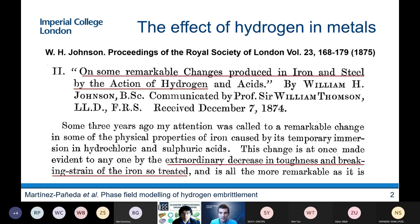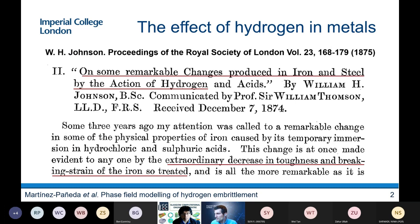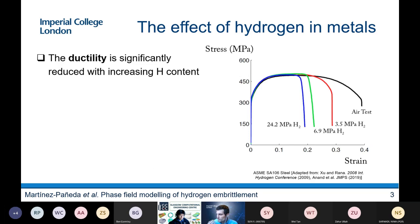So first of all, what is this hydrogen-assisted fracture? What is this hydrogen embrittlement? Well, this is quite an old problem. As you can see in the slide, it was first reported by Johnson in the proceedings of the Royal Society in 1875. He writes about some remarkable changes producing iron and steel, some extraordinary decreasing toughness and breaking strain of iron. You very rarely see words such as remarkable or extraordinary in scientific papers, particularly in those days. But the truth is that the effect of hydrogen in metals is truly remarkable and extraordinary.